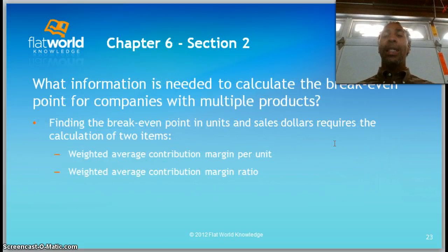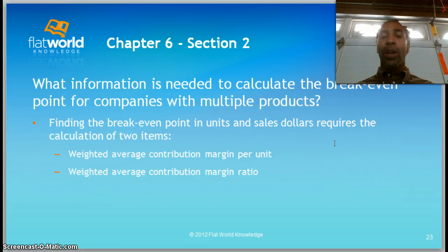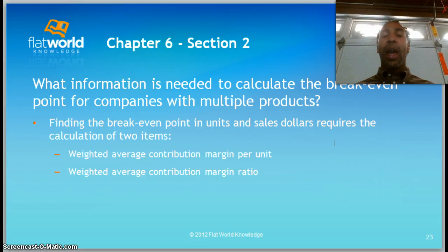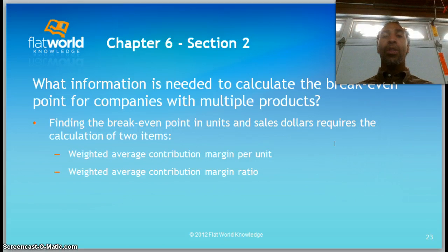What information is needed to calculate the break-even point for companies with multiple products? Finding the break-even point in units and sales dollars requires two calculations: the weighted average contribution margin per unit, and the weighted average contribution margin ratio. The weighted average CM per unit is just S minus V, and the weighted average CM ratio gives us that percentage — last time it was 0.40 or 40%.